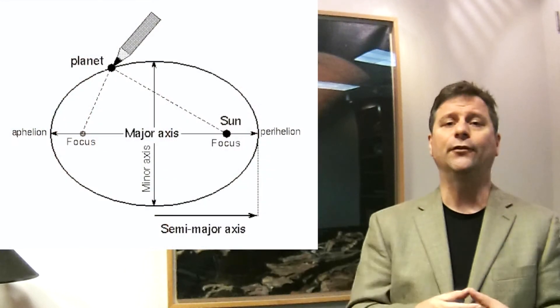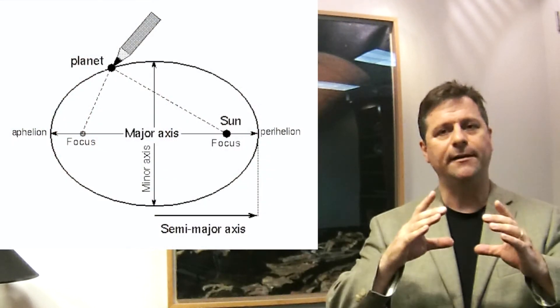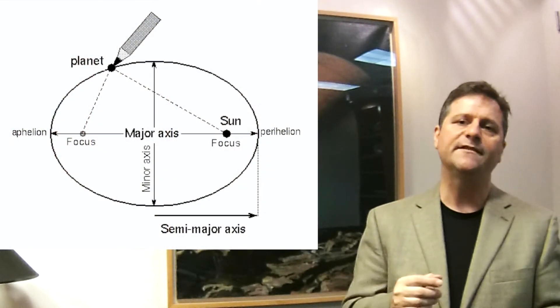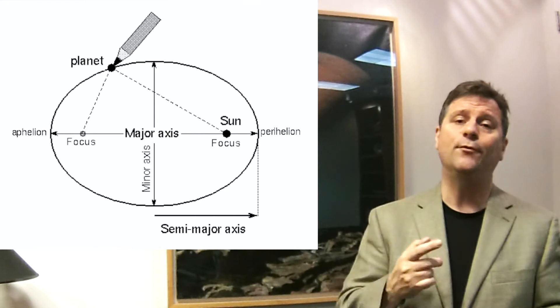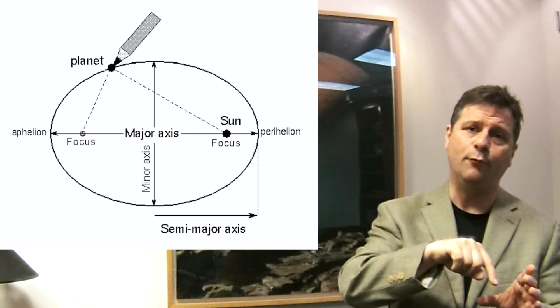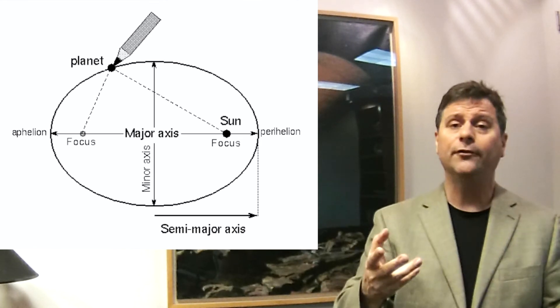Instead of using circles, he tried an ellipse. So he said, ah, wait, if I make the orbits not circular, but ellipses, guess what? And put the sun at the focus of one ellipse, then it works. I don't need equants.